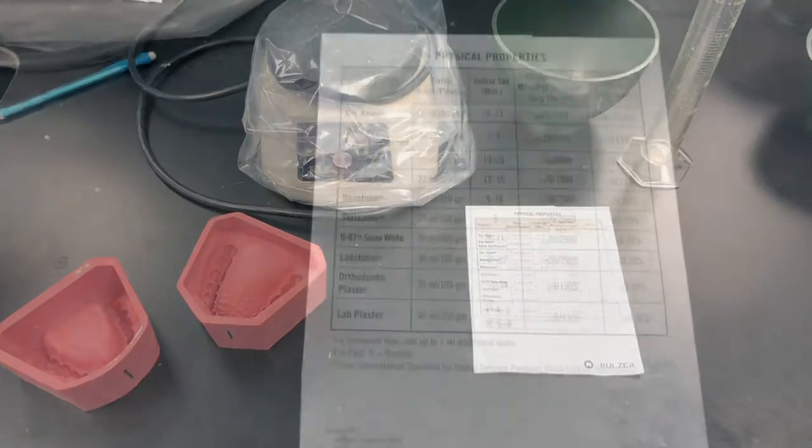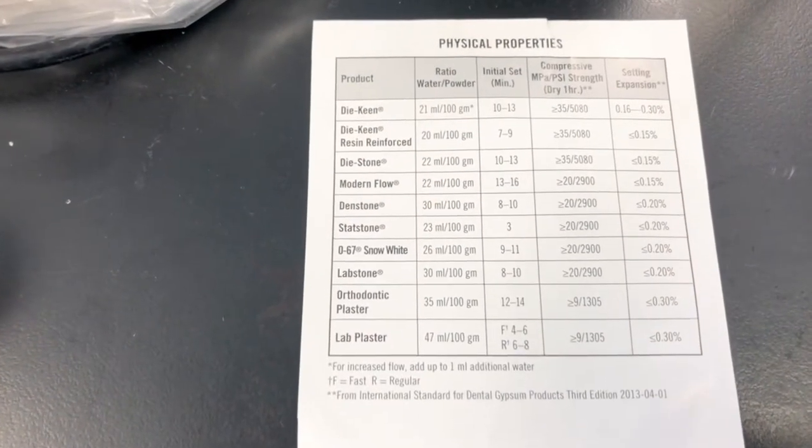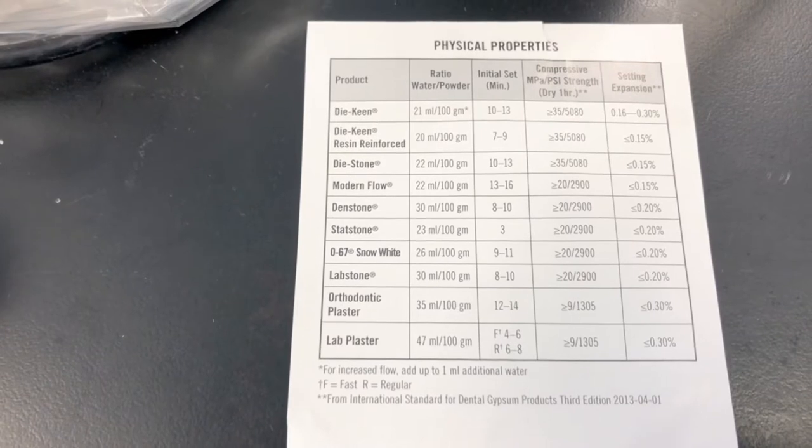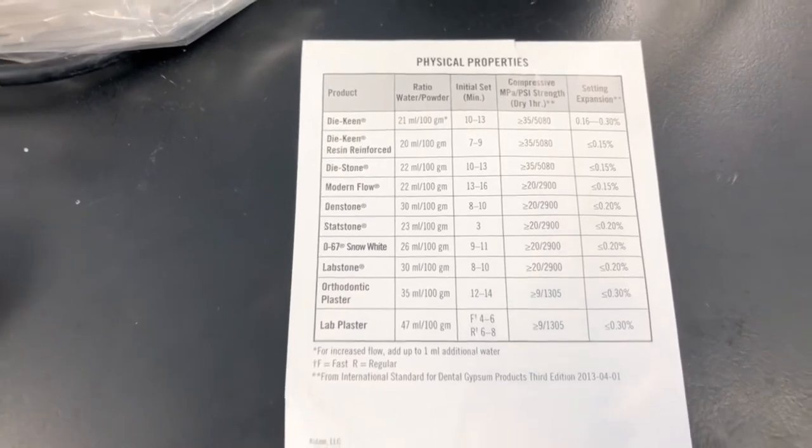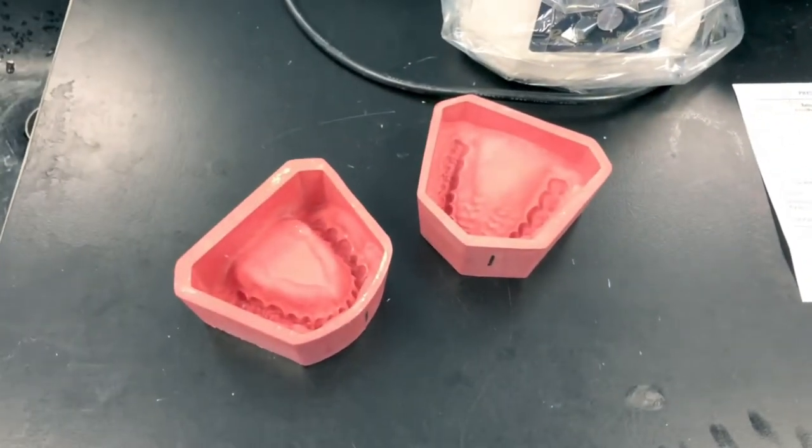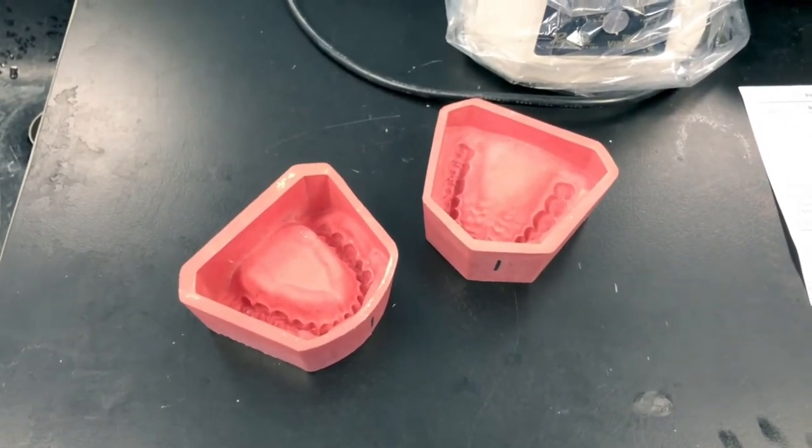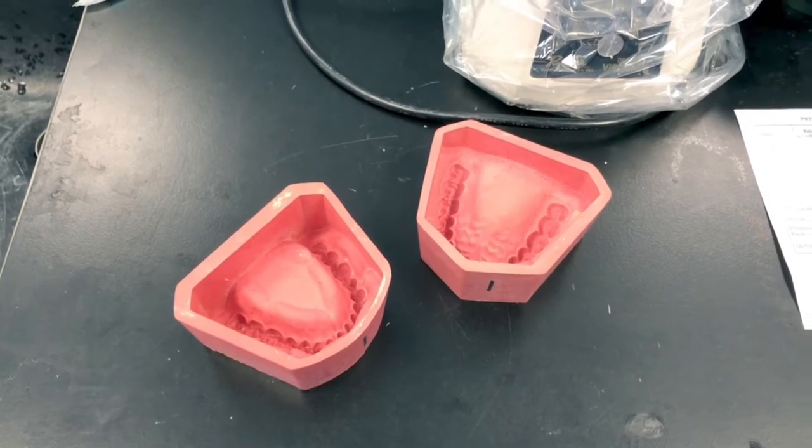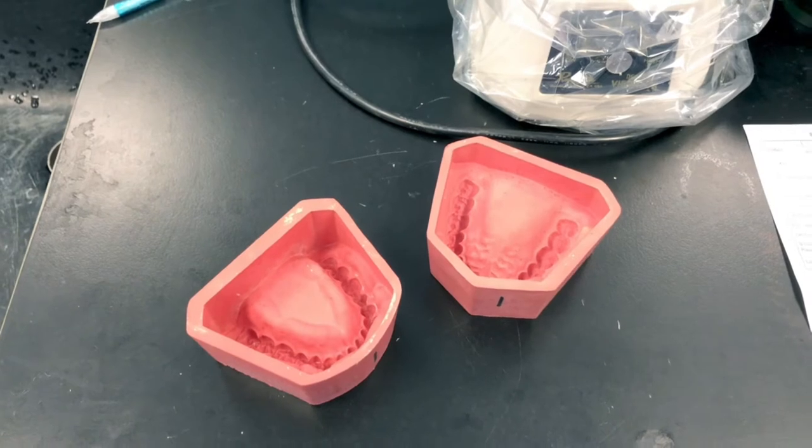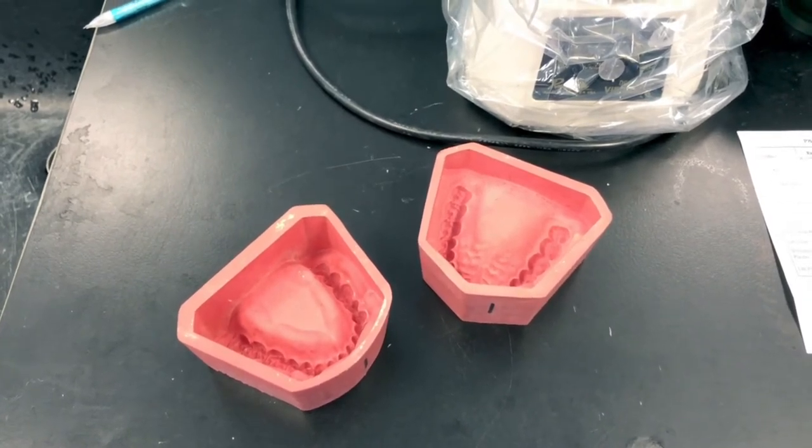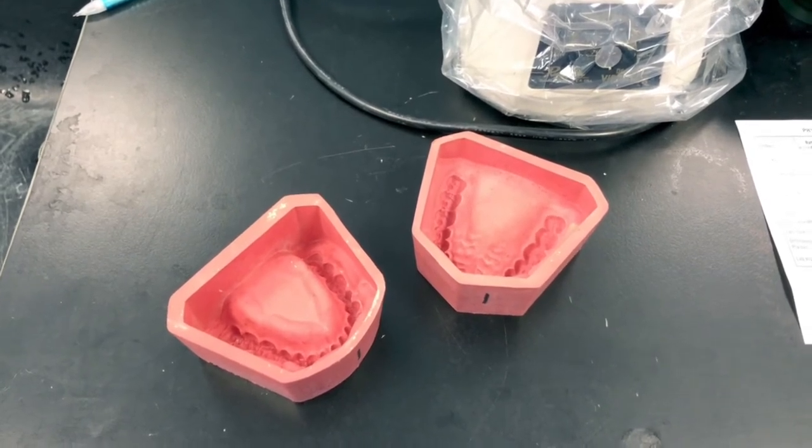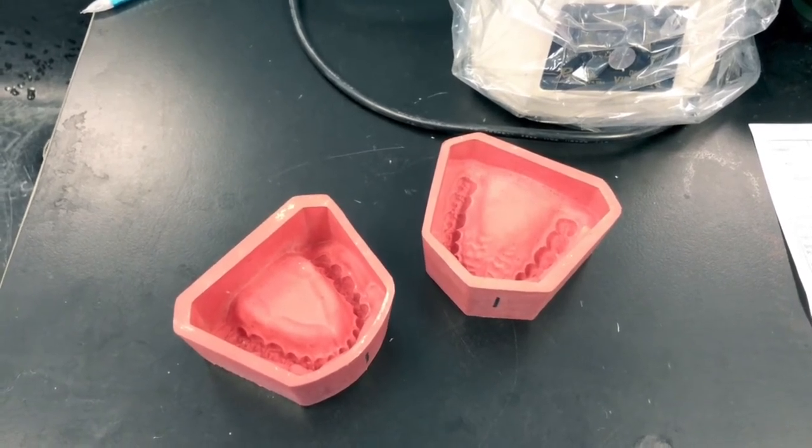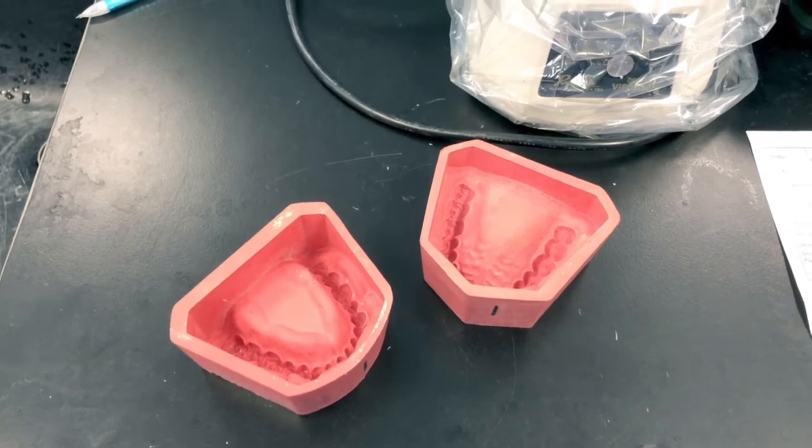Looking at our water to powder ratios and using dense stone, we need 30 milliliters of water for every 100 grams of powder. To fill up these rubber molds, I need 150 grams of powder for each mold. Pour up your impressions separately. Don't try to mix a huge batch of stone. Trying to pour up two full models with one batch is not a good idea because the stone will probably set up too quickly, especially if we're new to this technique. So 150 grams of powder means I need one and a half times the liquid, so I'll need 45 milliliters of water.